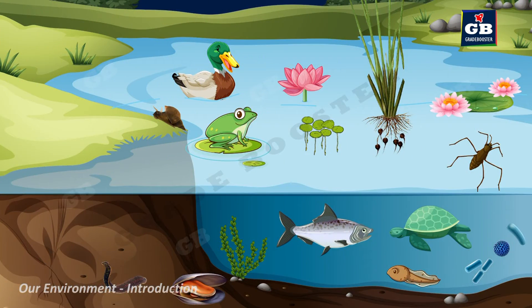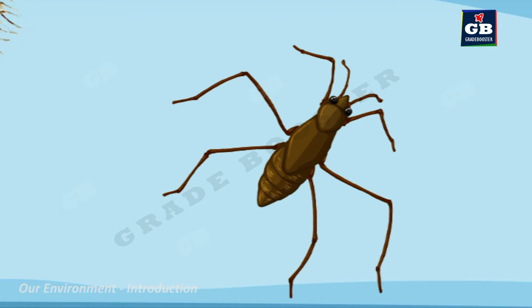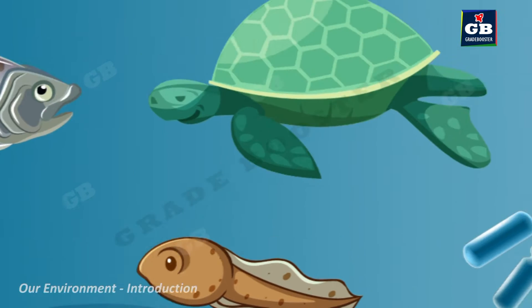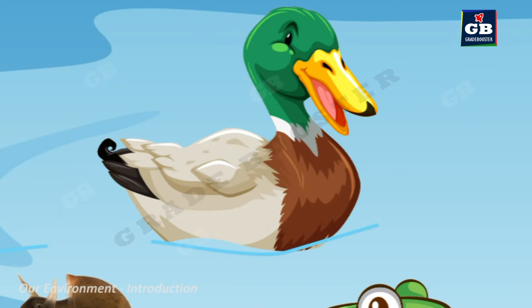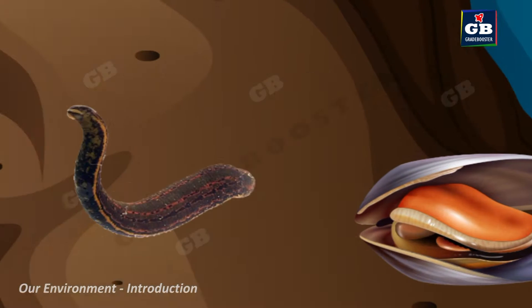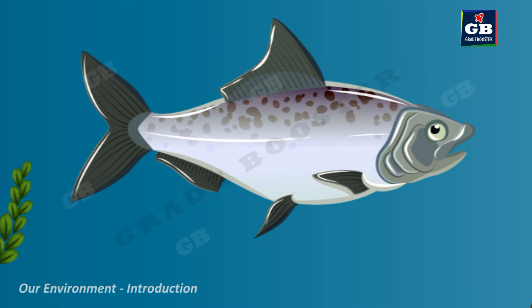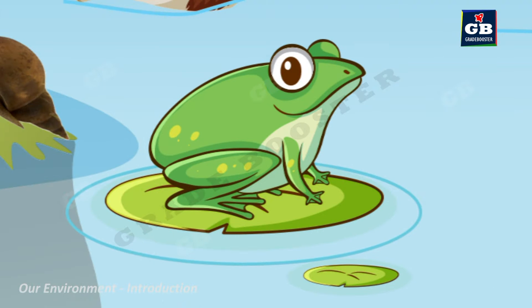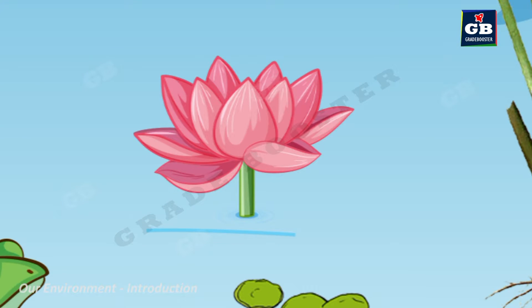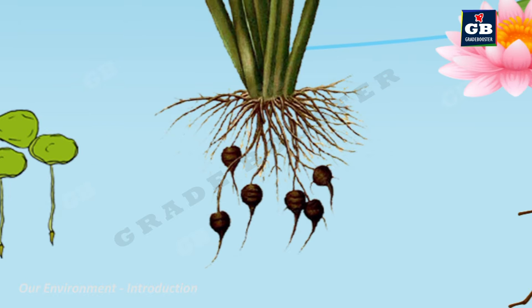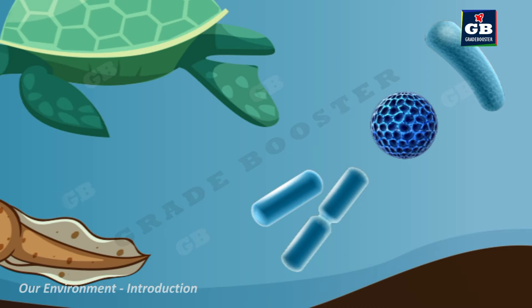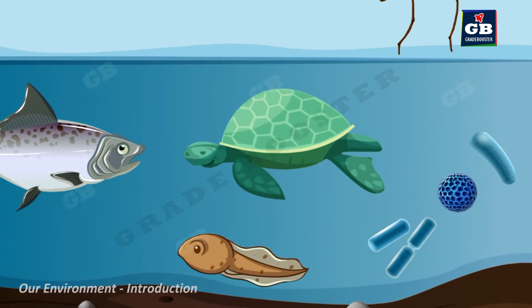Now let us see the different organisms of a pond ecosystem. Animals like pond snail, pond skater, tadpoles, turtle, duck, marshals, leech, fish, and frog. Plants like water lily, lotus, duckweed, and water chestnut.